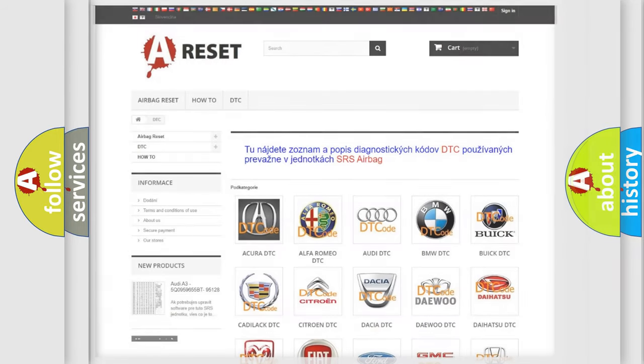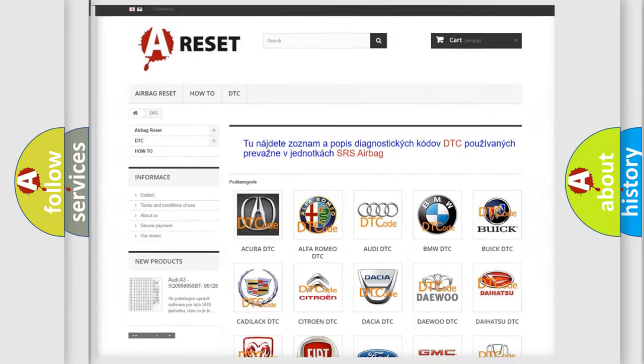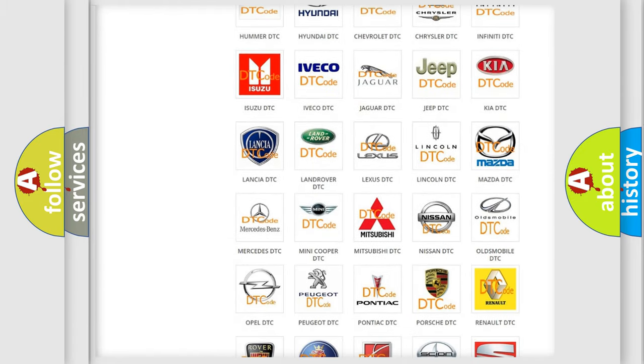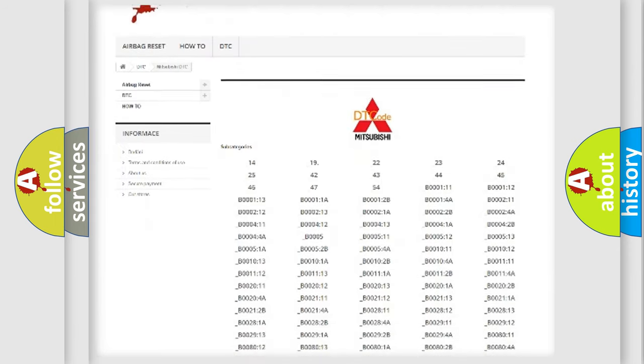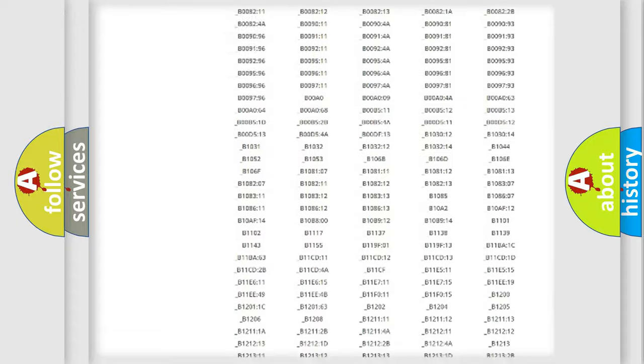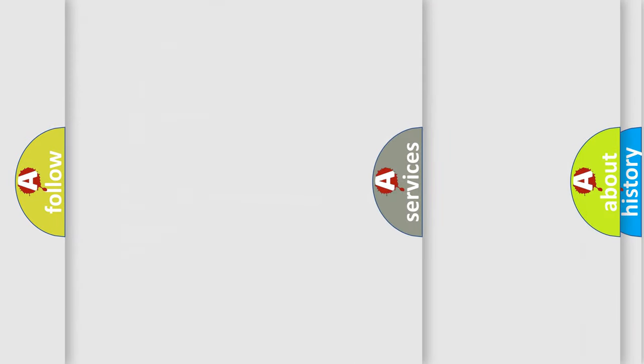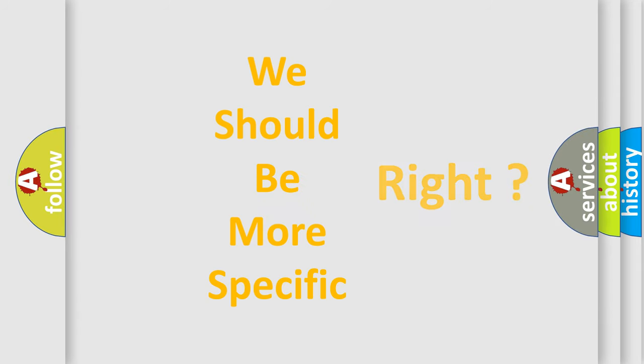Our website airbagreset.sk produces useful videos for you. You do not have to go through the OBD2 protocol anymore to know how to troubleshoot any car breakdown. You will find all the diagnostic codes that can be diagnosed in Mitsubishi vehicles. Also many other useful things. The following demonstration will help you look into the world of software for car control units.